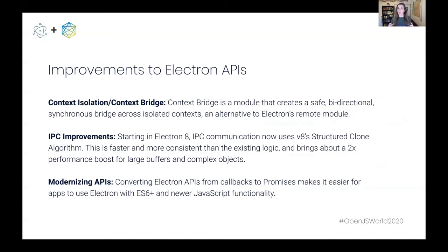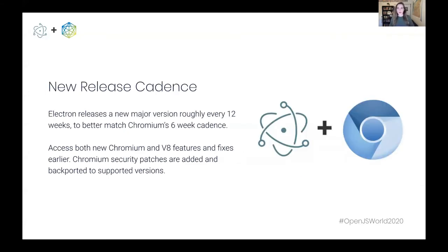We've also made a lot of improvements to Electron's core APIs. Some of the highlights include the introduction of a new module called Context Bridge, which we're hoping to use as we deprecate our remote module to give developers a safer way to communicate across contexts. We also made improvements to how we send complex JavaScript objects across IPC — we're now using the V8 structured clone algorithm. And we've been actively modernizing our APIs, a big example being converting our internal APIs to return promises rather than using callbacks. Arguably the largest change we made in the incubation period happened in May of 2019: we changed our release cadence to match more closely with Chromium's. Chromium releases once every six weeks, and Electron now releases a new major version roughly every 12 weeks, meaning consumers now have access to newer versions of Chromium faster.